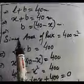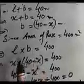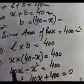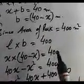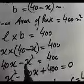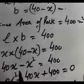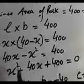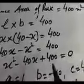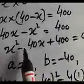So, length times breadth equals 400. Substituting length equals x and breadth equals 40 minus x: x times (40 minus x) equals 400. Expanding: 40x minus x square equals 400. Rearranging: x square minus 40x plus 400 equals zero. Comparing with ax square plus bx plus c: a equals 1, b equals minus 40, c equals 400.